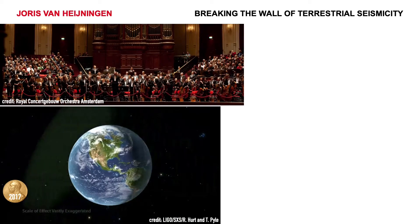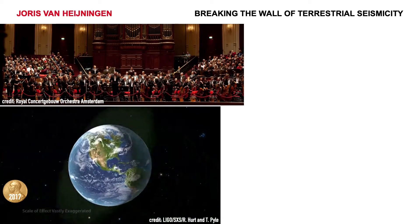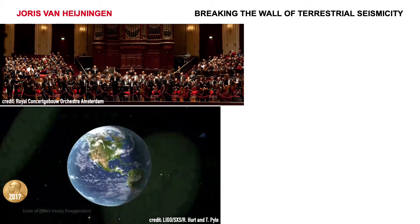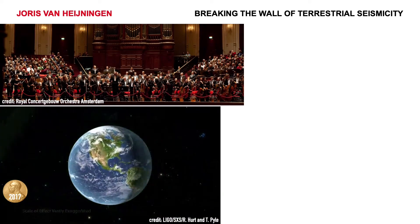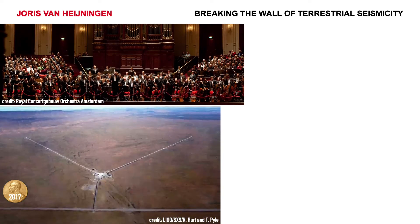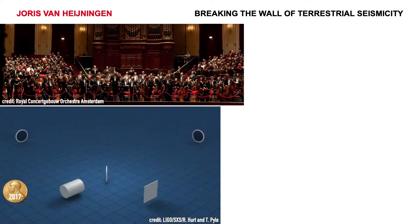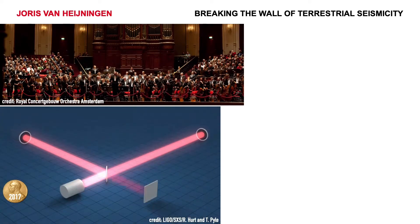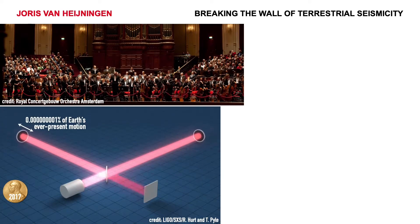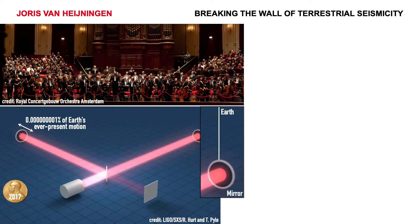This pulse of gravitational waves stretches and squeezes the Earth. The scale of this effect is vastly exaggerated, because we need detectors like LIGO to convert this stretching and squeezing into flashes of light. This stretching and squeezing makes the mirrors move a tiny fraction of the Earth's ever-present motion, so we need to decouple the mirrors from the Earth's motion — and for that we use suspensions.